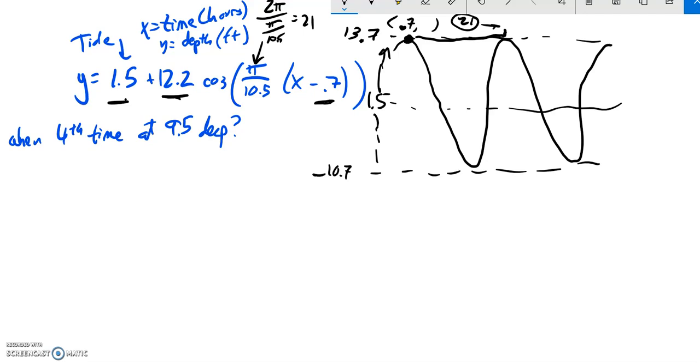And since 0.7 is here, 0 is probably about here, I'm just estimating. And what I want to know is when is it going to be 9.5 deep? So 9.5 might be about here. So notice it happens here, then it happens here, then it happens here. It just keeps happening as that tide cycles through.